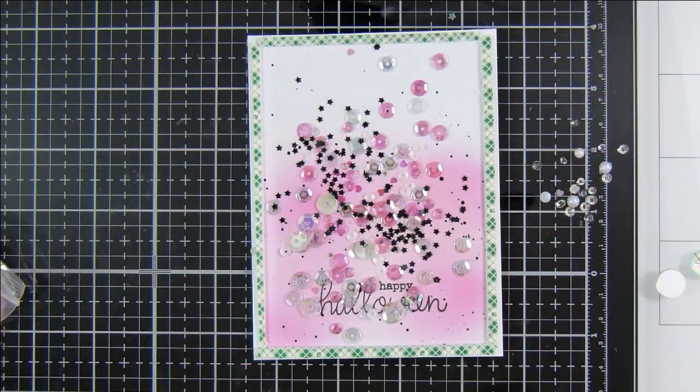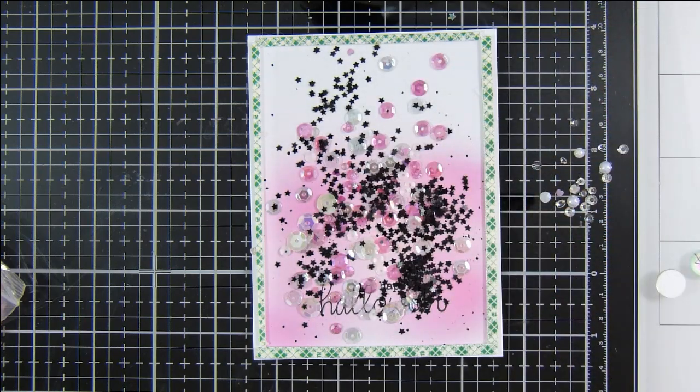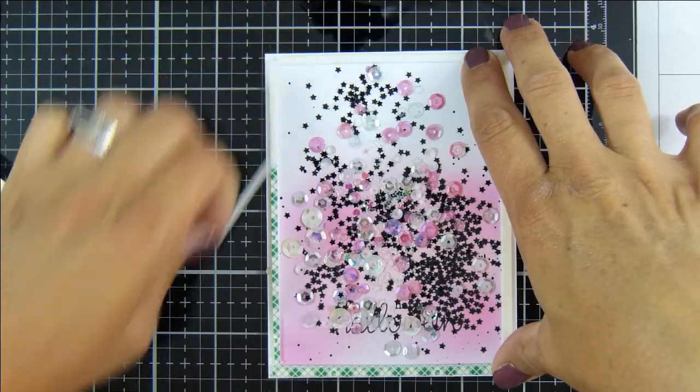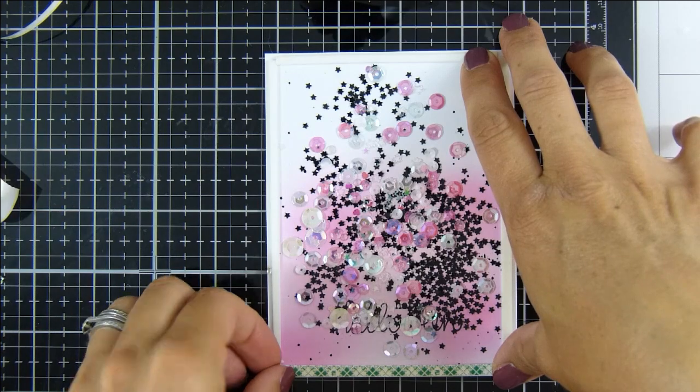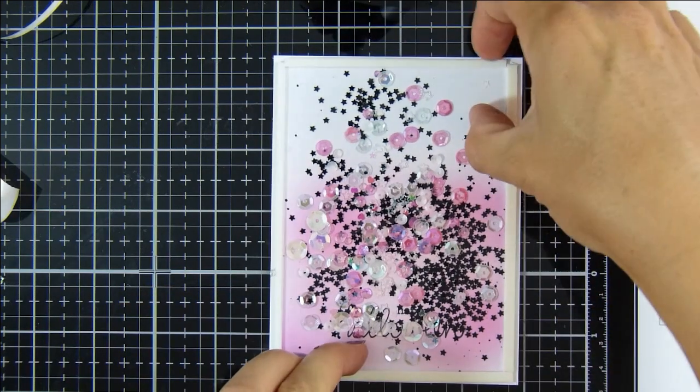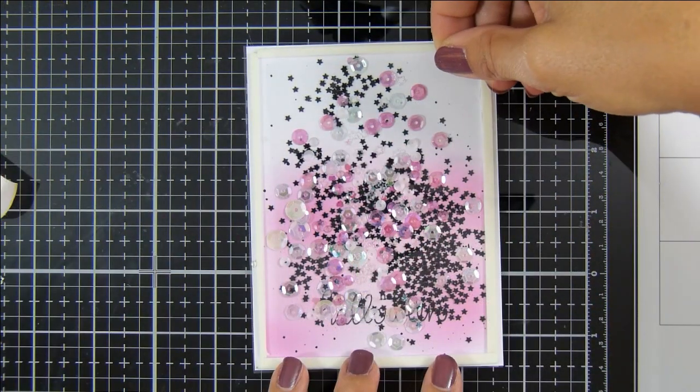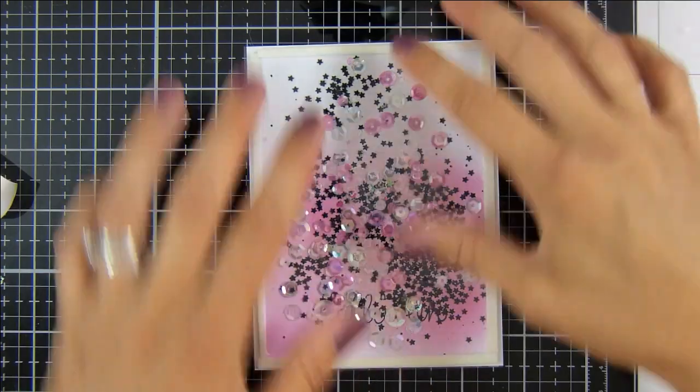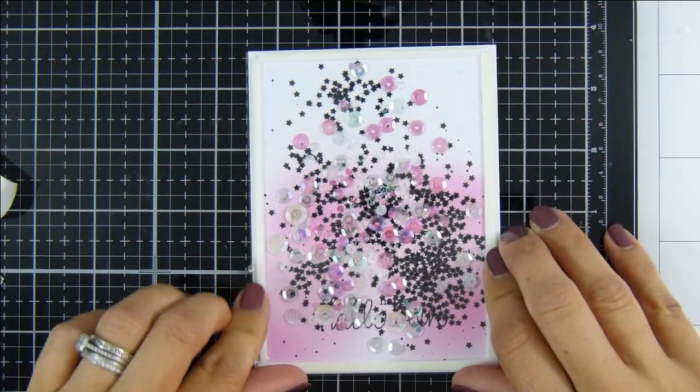Once I'd let that dry a little, I'm popping in all my shaker bits, removing my release paper from that foam tape, and I'm popping a bit of acetate on top which measures the same size as that cardstock underneath.